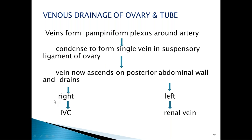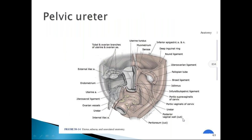Ovarian venous drainage: veins form a pampiniform plexus that condenses to a single vein in the suspensory ligament. The right ovarian vein drains into the inferior vena cava, and the left ovarian vein drains into the left renal vein.